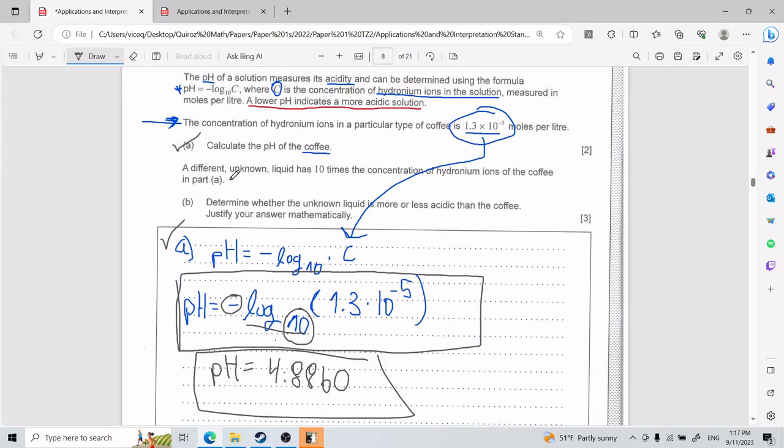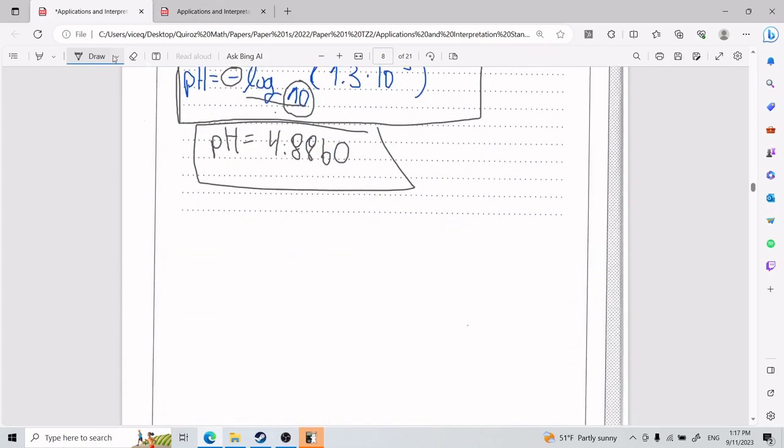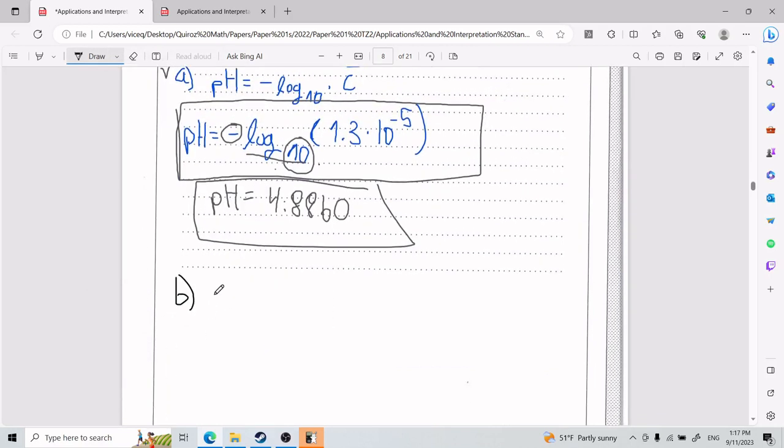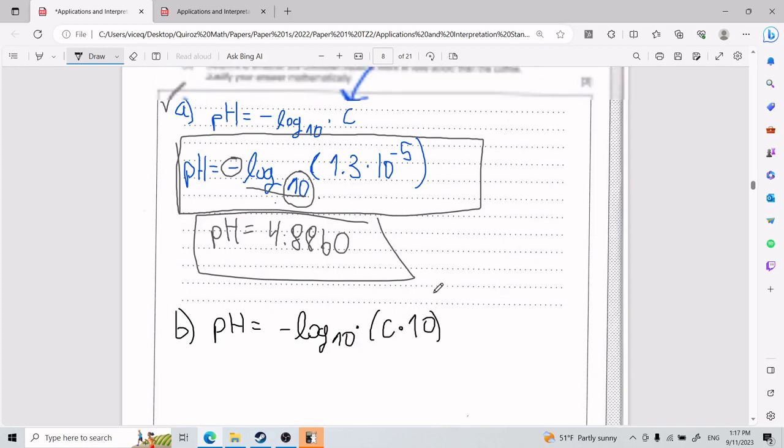Then they tell us, okay, that a different unknown liquid has 10 times the concentration of hydronium ions of the coffee in part A. And we need to determine whether this unknown liquid is more or less acidic than the coffee, and to justify the answer mathematically. And so now that we understand how the log works for part B, it's not that much different. So we take pH, we have negative log, we have base 10, and we multiply it by C times 10. C times 10. Why is it C times 10? Because they tell us that this liquid, this unknown liquid, has 10 times the concentration. So that's why I'm doing times 10.